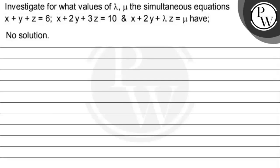Hello. Let's read this question. The question says: investigate for what values of lambda and mu the simultaneous equations x plus y plus z equals 6, x plus 2y plus 3z equals 10, and x plus 2y plus lambda z equals mu have no solution.